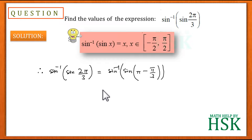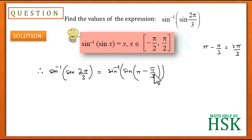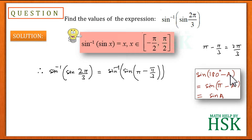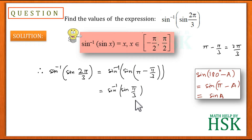Taking sin⁻¹(sin(2π/3)), we write this as sin⁻¹(sin(π - π/3)), since π - π/3 = 2π/3. Using the identity sin(π - a) = sin(a), this becomes sin⁻¹(sin(π/3)). The angle π/3 now lies in the interval [-π/2, π/2].